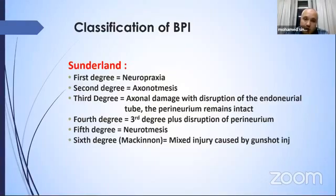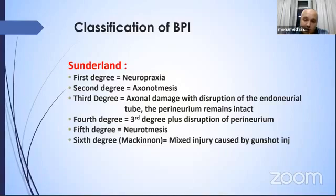Sunderland's third group includes axonal damage with disruption of the endoneurium but intact perineurium. The fourth group is like the third but even the perineurium is damaged. The fifth group is neurotmesis. A sixth group was added by Mackinnon, which is a mixed injury caused by gunshot injury.